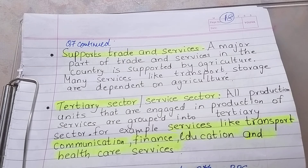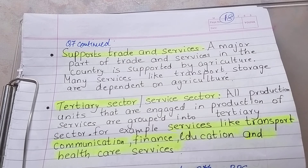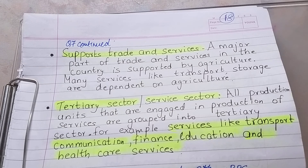So agriculture supports trade and services - in this, transport and storage are the words you need to use. Next point: tertiary sector, also called the service sector. All production units that are engaged in the production of services are grouped into the tertiary sector. For example, services like transport, communication, finance, education, and healthcare services.